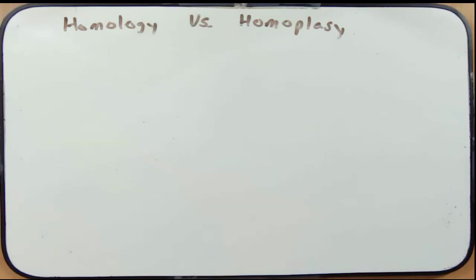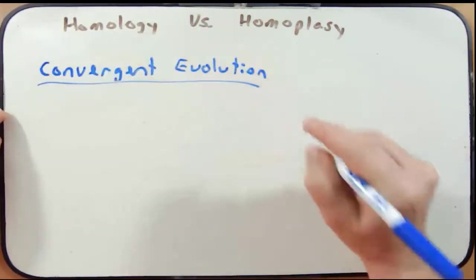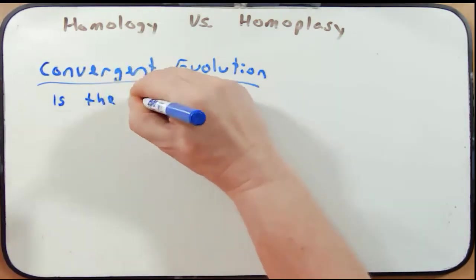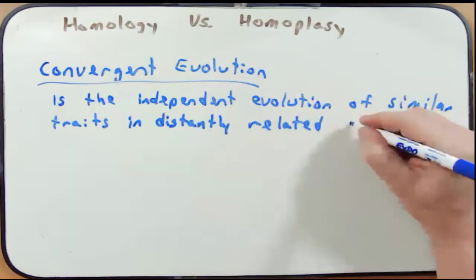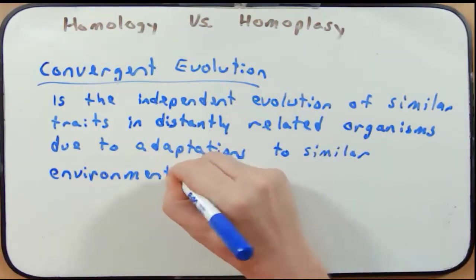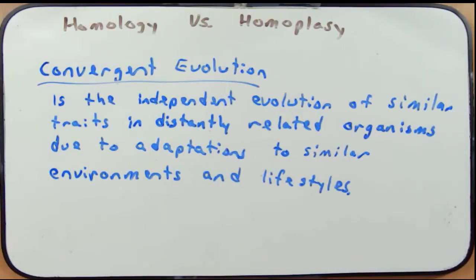As we consider homoplastic structures, it's important to define a new term: convergent evolution. This is the independent evolution of similar traits in distantly related organisms due to adaptations to similar environments and lifestyles. Convergent evolution provides an explanation for how homoplastic traits arise — because these organisms were exposed to similar environments and lifestyles that led to the same evolutionary pressures.